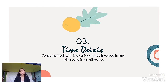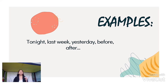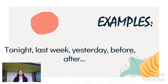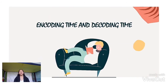Next we have the time diaccess. Time diaccess concerns itself with the various times involved in and referred to in an utterance. So here are the examples of time diaccess: we have tonight, last week, yesterday, before, after, now, then, soon, and so forth, and also different tenses.